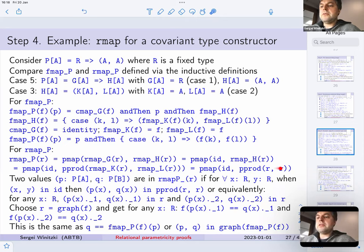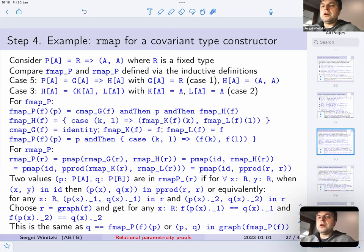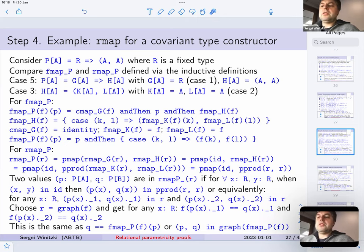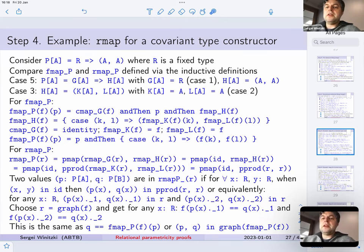If you compare fmap and rmap you can translate mechanically from one to the other. You have a map — a pair mapper — between identity and the pair product of r and r. It's a pretty straightforward procedure; actually simpler to write down rmap in terms of combinators than to write down the fmap function.